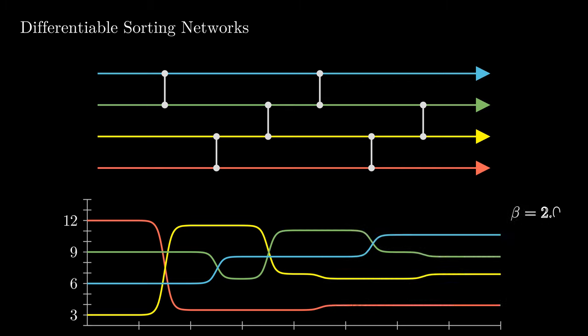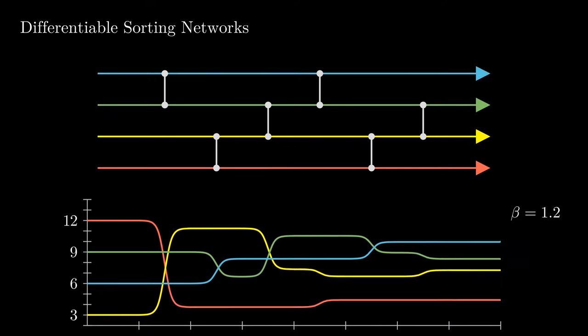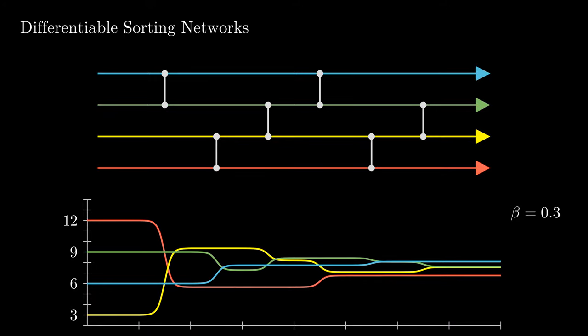Let us consider how changing the steepness or inverse temperature beta changes the differentiable sorting. By increasing beta, it becomes close to a hard sort and by decreasing beta, the values get closer together.